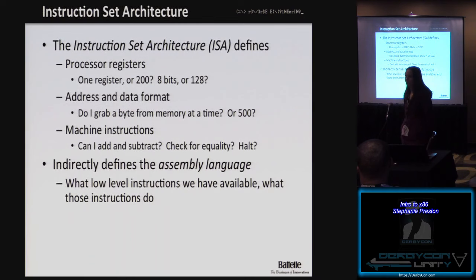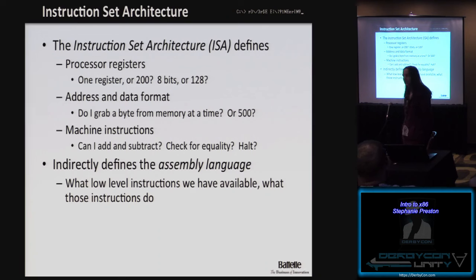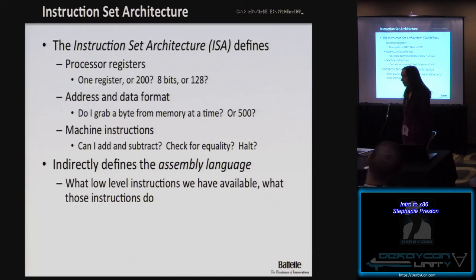There's something called the instruction set architecture, or ISA. An ISA defines the processor registers that exist for a particular architecture. We're concentrating specifically on x86. The x86 ISA defines what registers are available, the size of those registers, the address and data format, and the machine instructions — can I subtract, multiply, add? It defines what functionality exists in that assembly language, so it indirectly defines the assembly language and the low-level instructions we have.